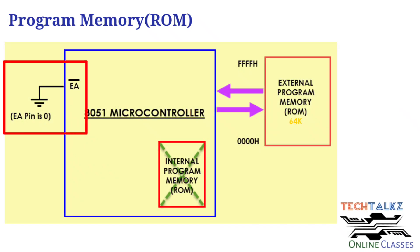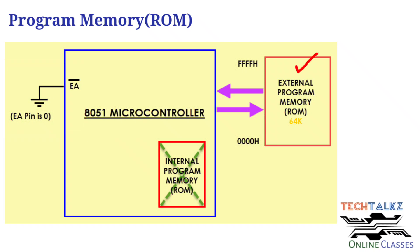The next case is when the external access pin is connected to ground. The CPU avoids the internal program memory completely. The complete program runs from external memory — the full 64KB external memory from 0000 hex to FFFF hex is used.